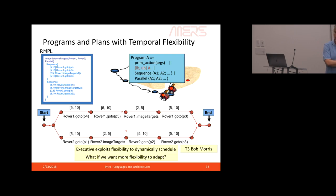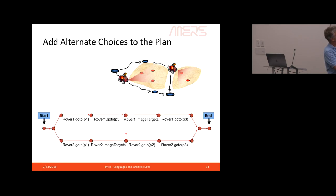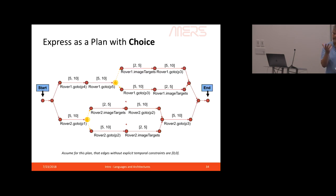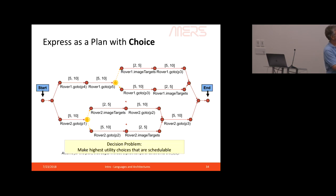For more adaptivity, suppose a rock appears at one waypoint and you can't take the image. We can add flexibility by giving two possible poses for each robot to do imaging. Rover 1 can image at either of two different locations; same for Rover 2. This is a temporal plan with timing constraints and non-deterministic choices added in. The decision problem is to come up with a feasible set of actions — for example, not blocked — and then add the notion of utility to make it a decision-theoretic program.